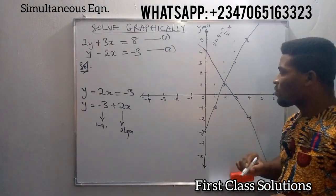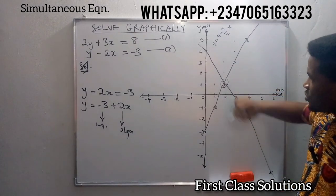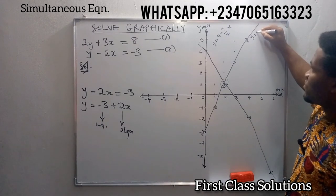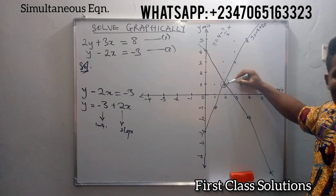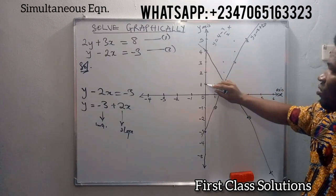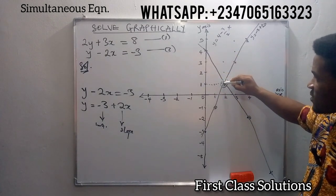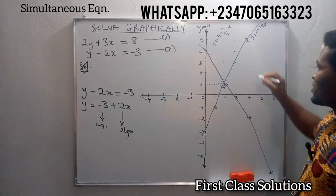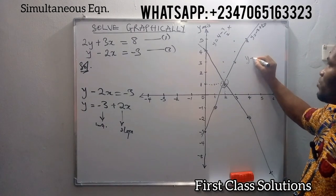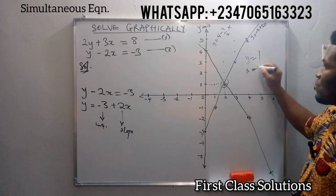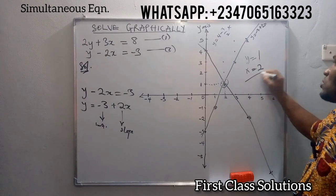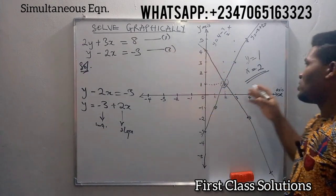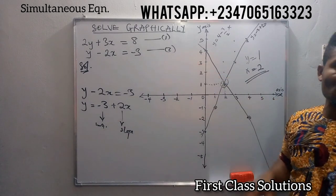Here we have the intersection of these two equations. This is our second equation where we have y equals to minus 3 plus 2x. At this point of intersection, on the y-axis we have 1, and on the x-axis we have 2. It means that the solution to this equation is y equals 1 and x equals 2. This is the solution of this simultaneous equation — these values of x and y satisfy both equations.